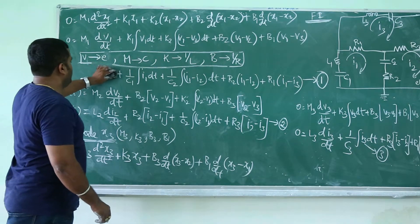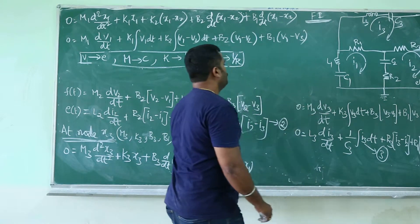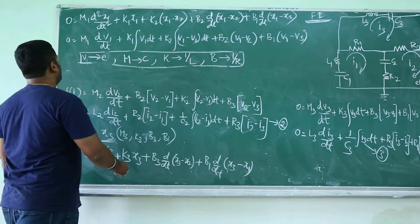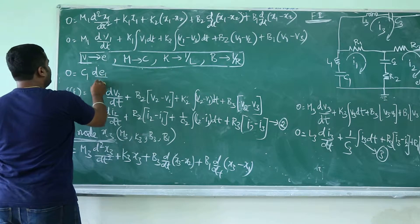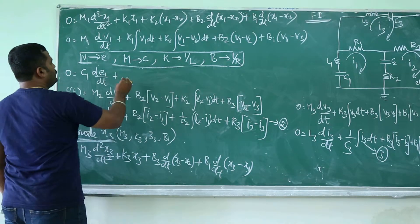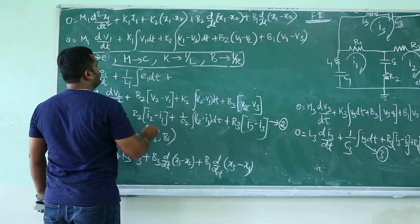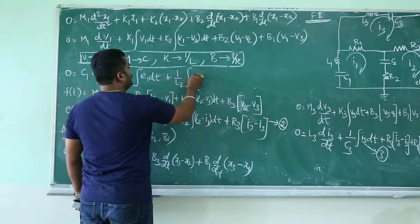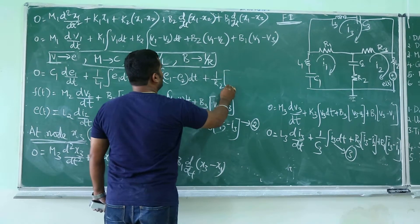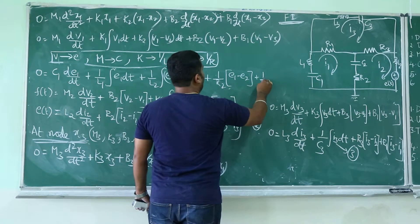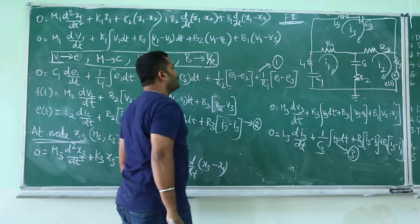Now let us write the analogous equation for equation 1 of the mechanical system. So 0 equals C1 dE1 by dt plus 1 by L1 integration of E1 dt plus 1 by L2 integration of (E1 minus E2) dt plus 1 by R2 into (E1 minus E2) plus 1 by R1 into (E1 minus E3). This is your first equation for the force-current analogous network.